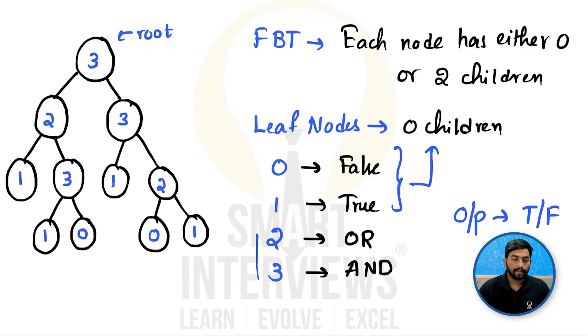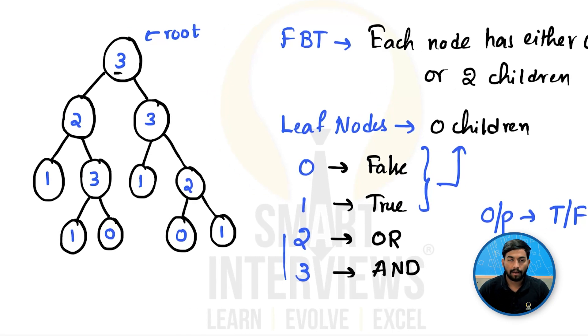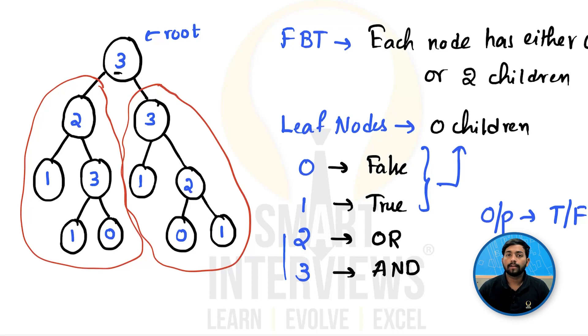So now let's start evaluating this tree. We will start with the root. Now if you look at the root, 3 is present that means you will have to apply AND operation on the result from the left side of the root and the right side of the root. Now if you look at this, on the left side we have left subtree. So to get the result of the subtree, first you will have to evaluate this left subtree. So let's start evaluating this.